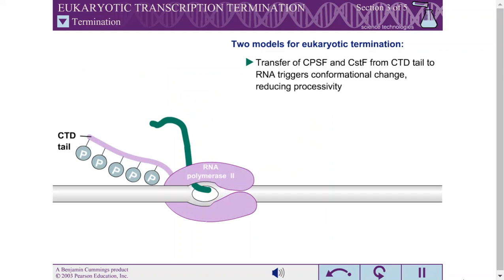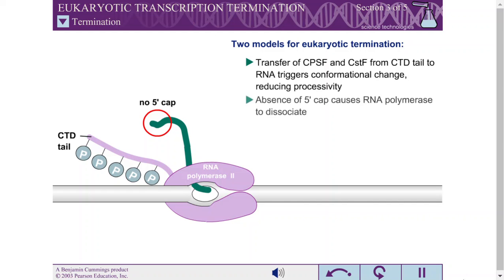The enzymes necessary for 5' capping are displaced during elongation, so the second RNA molecule does not form a 5' cap. The second model for eukaryotic termination states that it is possible that the absence of a 5' cap on the second RNA molecule is sensed by the polymerase, causing the polymerase to dissociate.